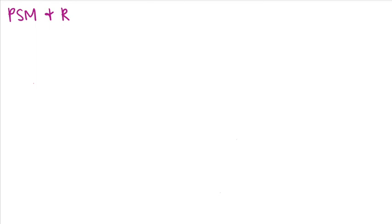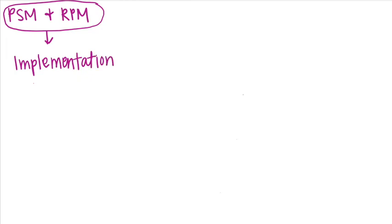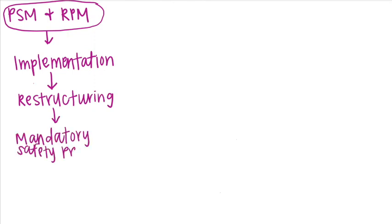With process safety management and a risk management plan, they implemented the four strategies of inherently safe design and restructured their company's safety culture. An effective training program was implemented and made mandatory so all employees can understand the hazards associated with the process and know how to respond to the release of hazardous chemicals.